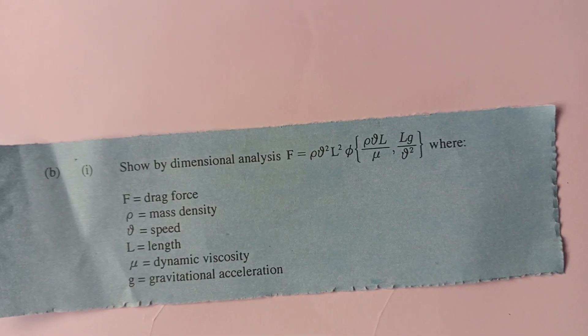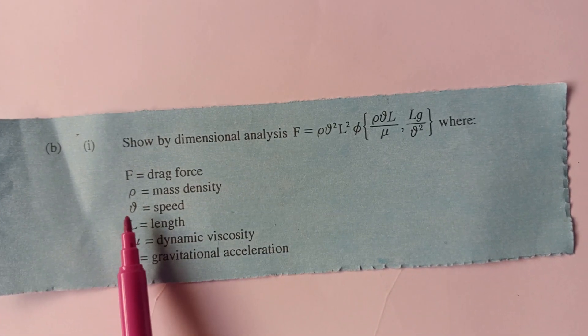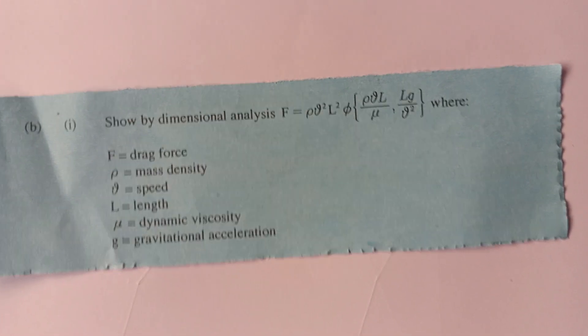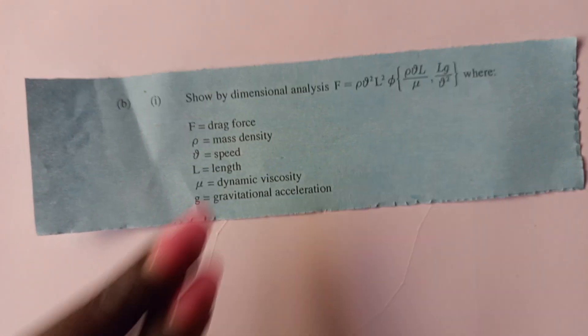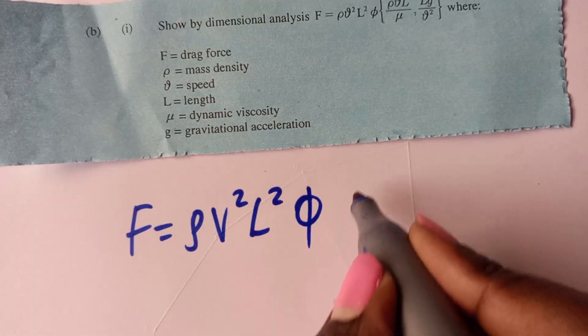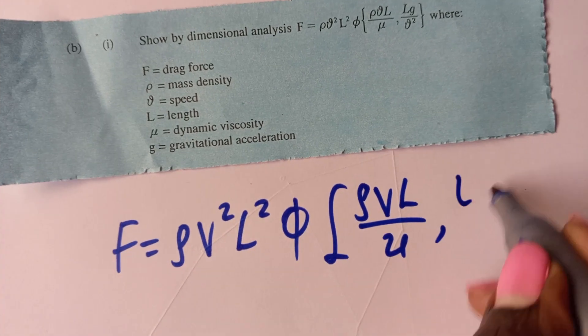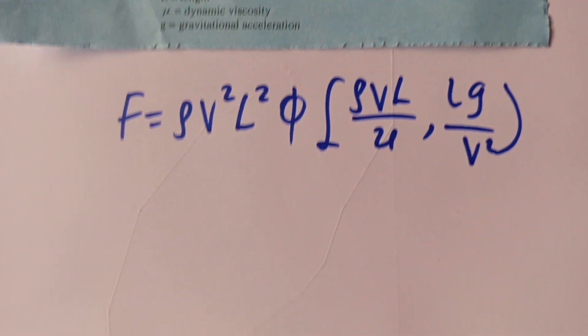Let's have a look at this question. We are given F as the drag force, rho as the mass density, V as velocity, L as the length, mu as dynamic viscosity, and G as gravitational acceleration. We are told that F equals rho V squared L squared, as a function of rho V L over mu, and L G over V squared.